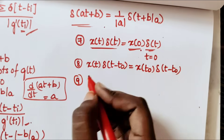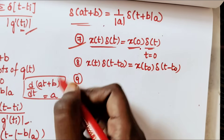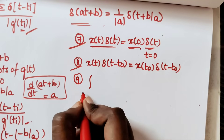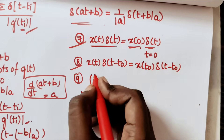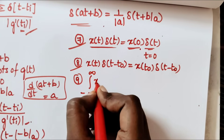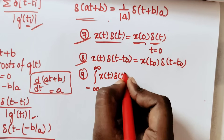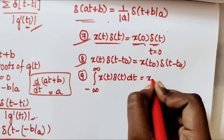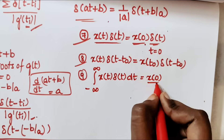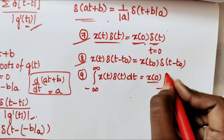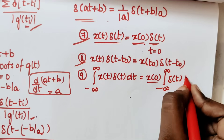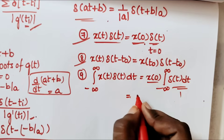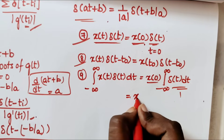Now I am going to apply integration to the seventh and eighth properties — here comes the ninth property. The integral from minus infinity to infinity of x(t) · δ(t) dt equals x(0), since x(0) is a constant, and the integral from minus infinity to infinity of δ(t) dt equals 1. Hence this value equals x(0).